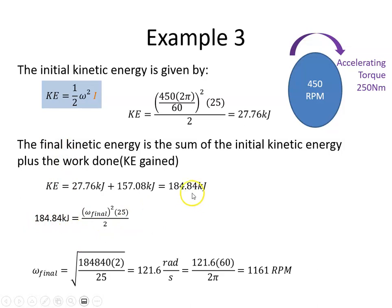That kinetic energy equals half omega squared times I. We know I is 25, so I just solve for that equation. I multiply by 2, then divide by 25 and get the square root of it. I get the final angular velocity as 121.6 radians per second, which works out to be 1161 revolutions per minute. That will be the final speed.